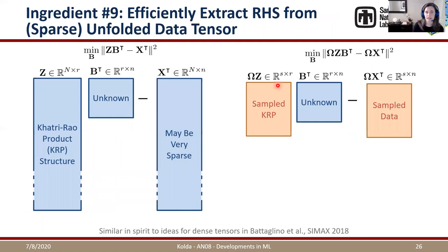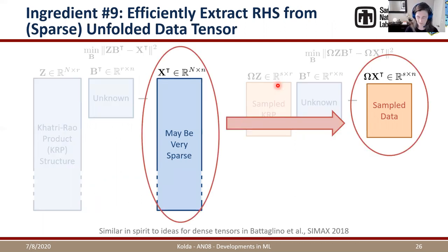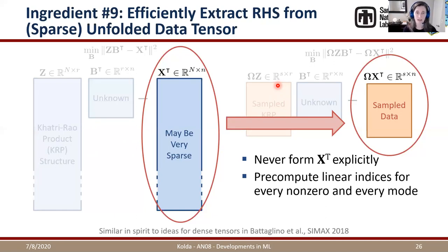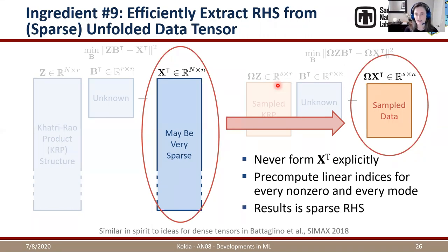The last piece is extracting corresponding rows of X without forming the full unfolded matrix. Rather than matching all D+1 indices for each non-zero — which is expensive — we precompute linear indices for every non-zero in every mode, so we only need to match one index. This yields a sparse right-hand side for the sampled system, which remains sparse even after sampling.